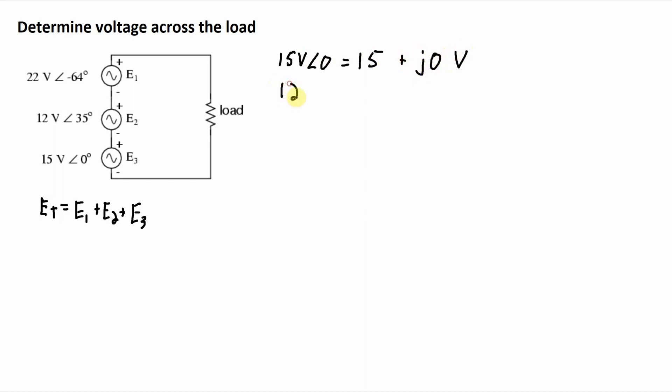The second one, 12 volts with a phase angle of 35 degrees. Well, the real part of that will be 12 times the cosine of 35. And the imaginary part will be 12 volts times the sine of 35 degrees.